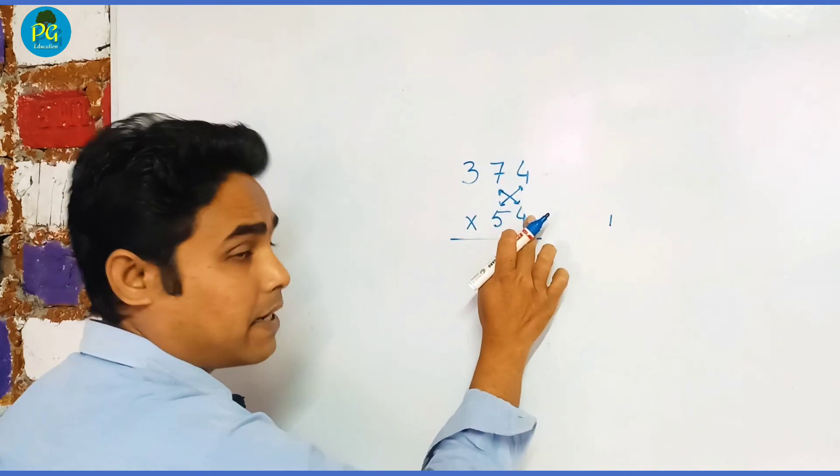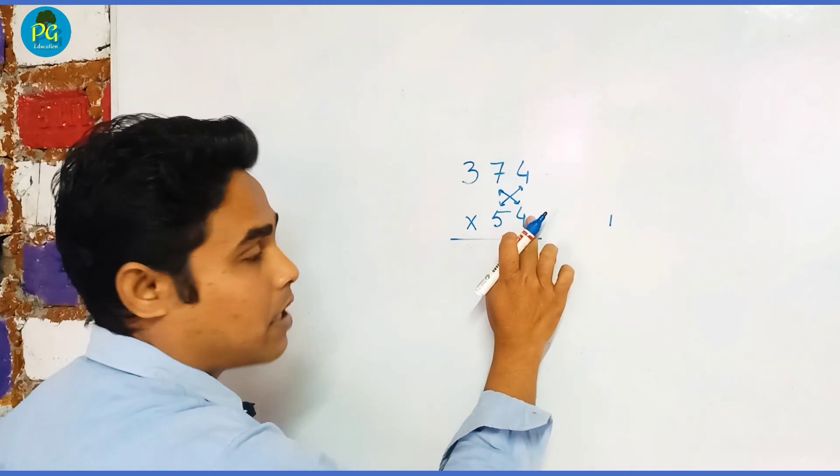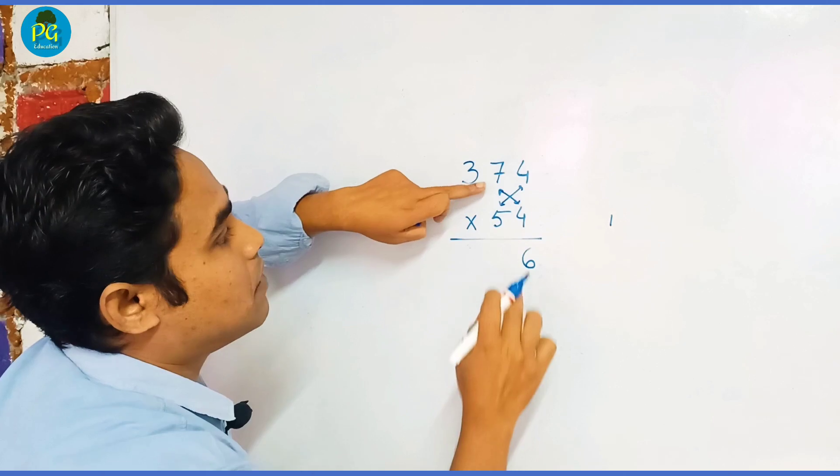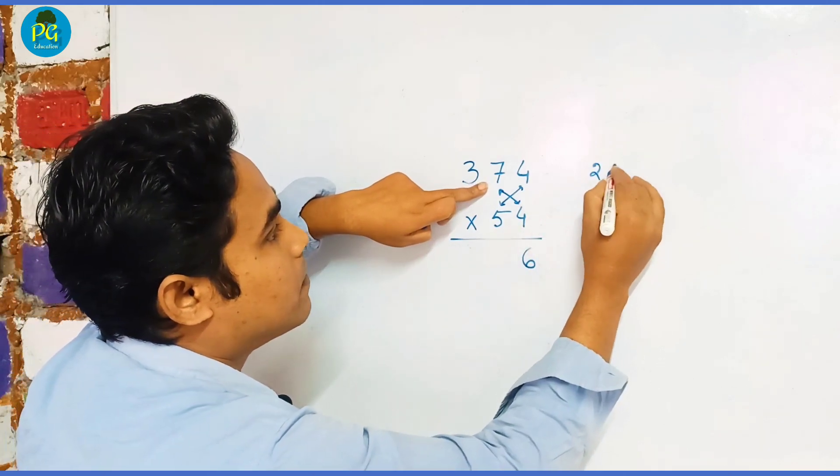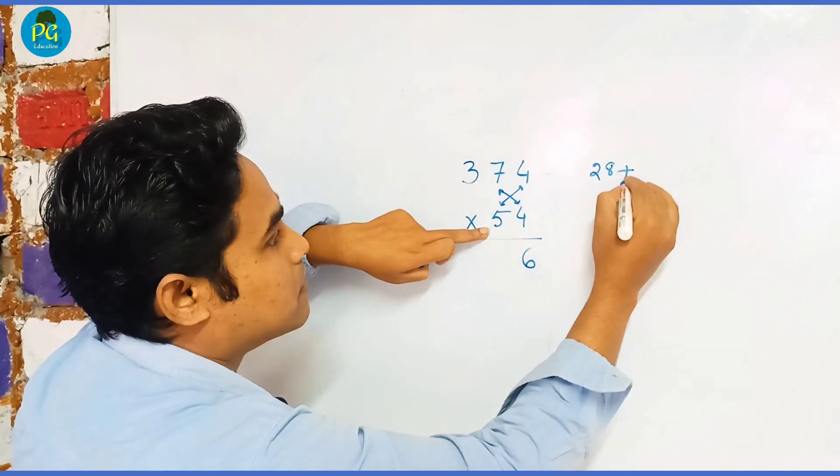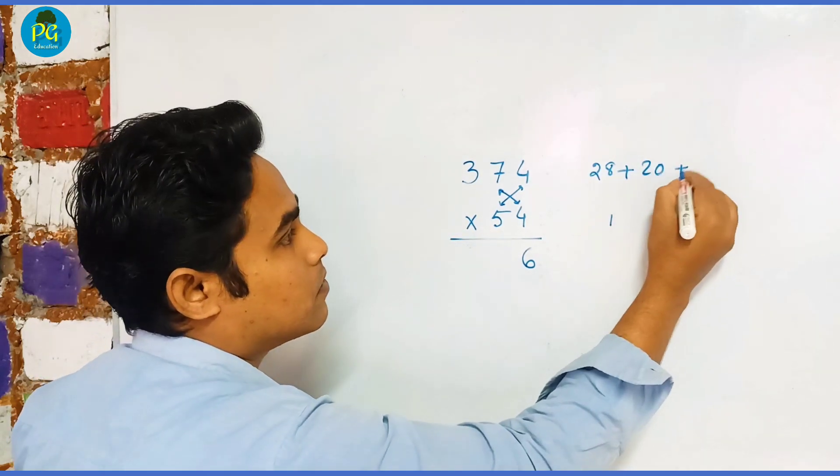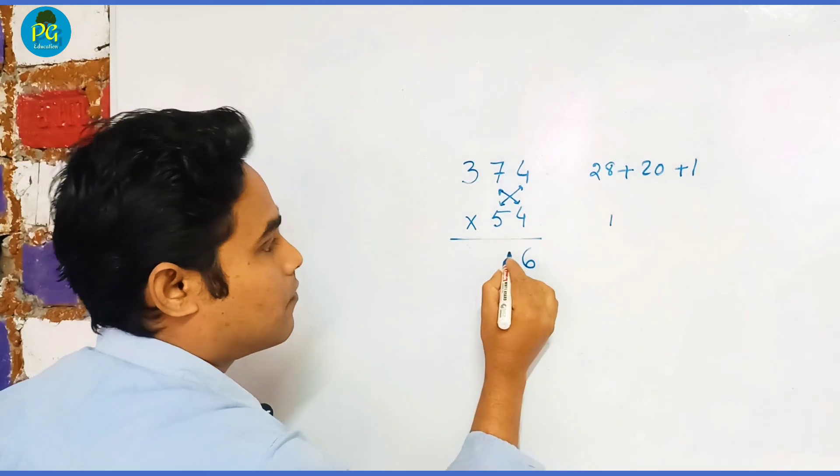7 × 4, and then we will add the product with the product of 5 and 4. That means 7 × 4 = 28, plus 5 × 4 = 20, and this 1 will be added. This is 49, write 9 and carry 4.